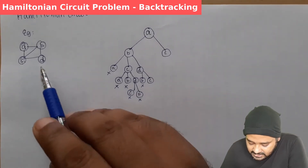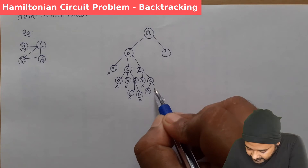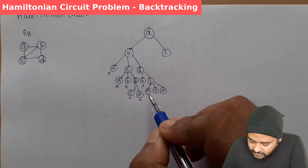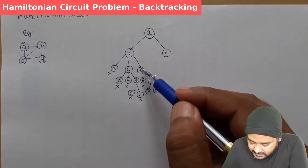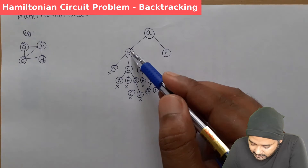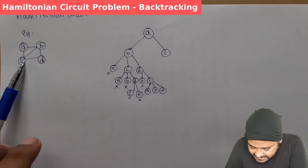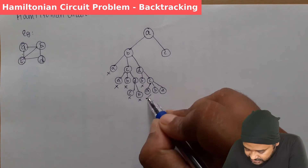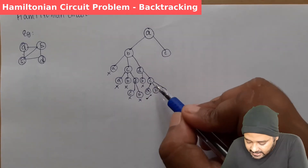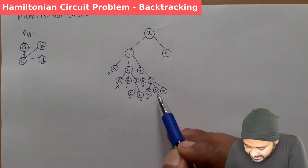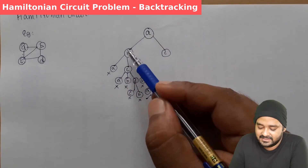Now we consider C as a child of B. The possibilities from C are A, B, and D. We mark A, B, and D. We check whether all nodes are visited: A, B, C, and D — all are visited and we return back to A. So we have traveled A → B → D → C → A. This is one optimal solution. We cannot stop after finding one solution; we must explore all possible solutions. Next, checking B and D from here — both are already visited, so this left subtree traversal is complete.